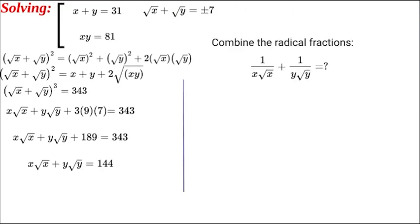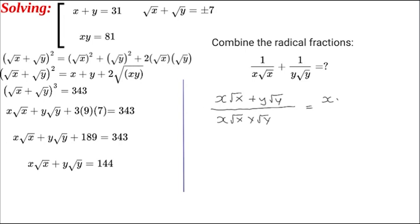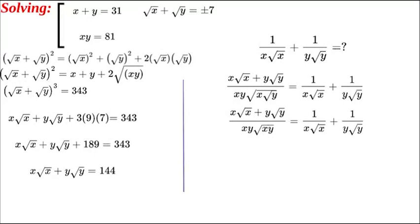Now we're going to use this to obtain our required fraction. We need to combine the fractions 1 over x√x and 1 over y√y. Cross multiplying, the numerator becomes x√x plus y√y, all over the product x√x times y√y, which simplifies to xy times the square root of xy.